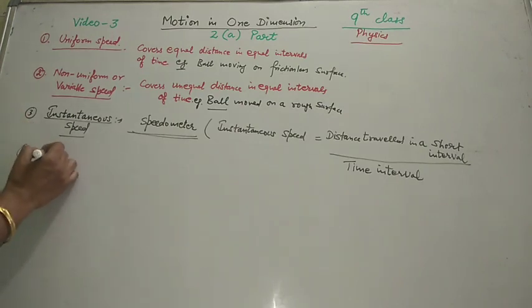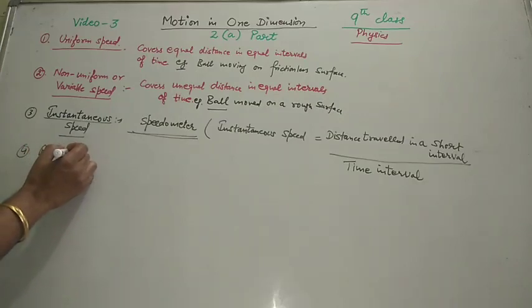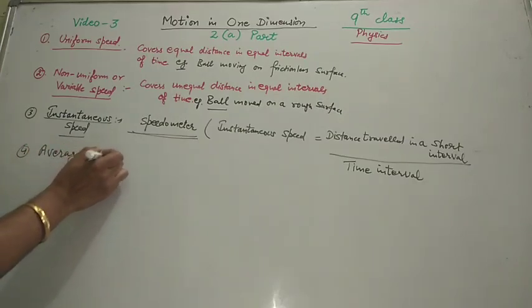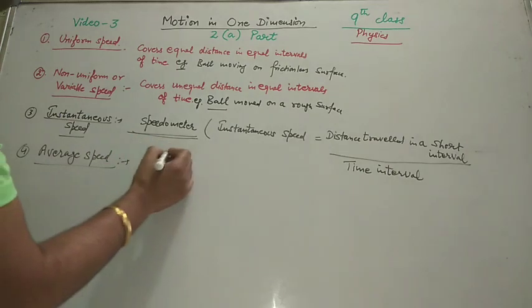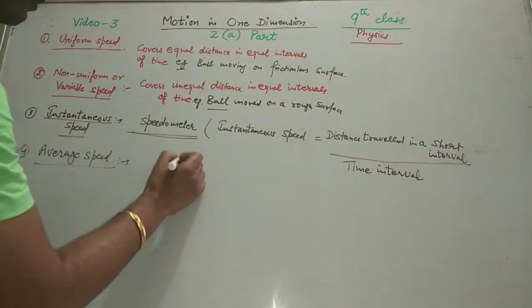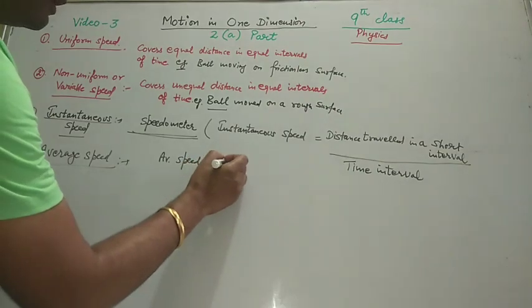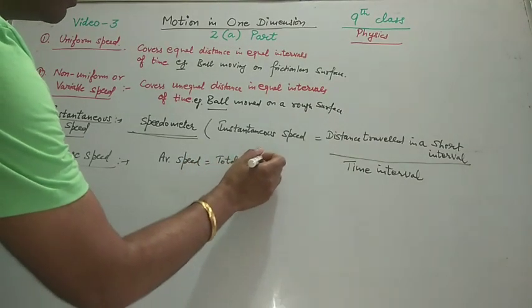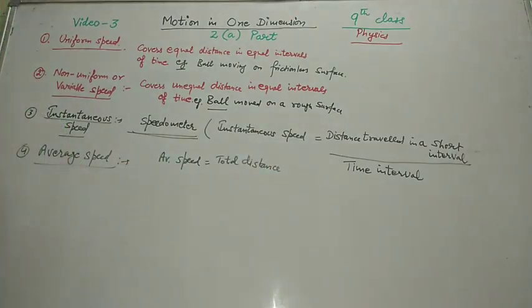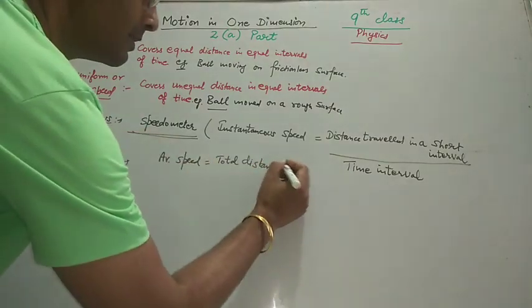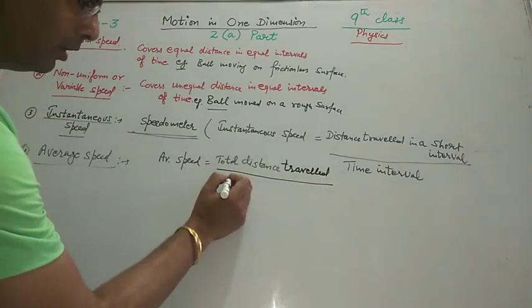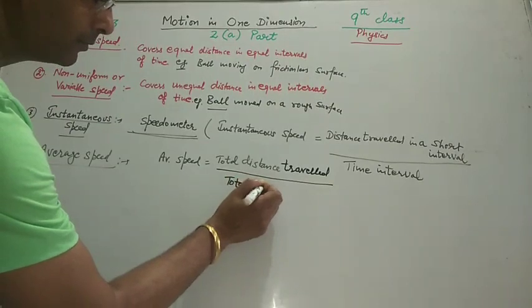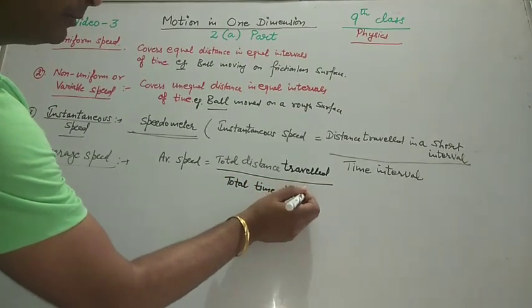Fourth is average speed. Average speed is the ratio of total distance covered by the body to the total time taken.